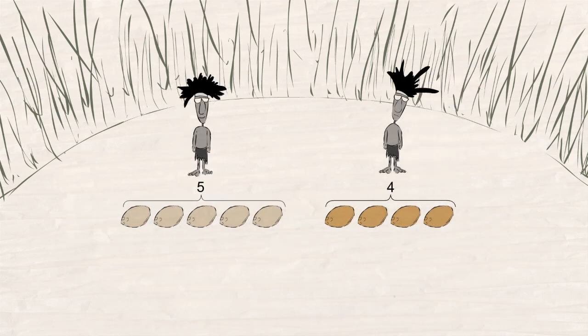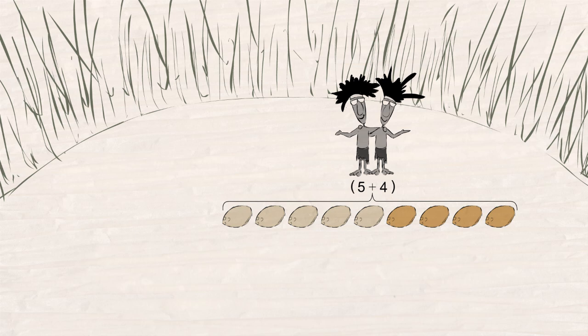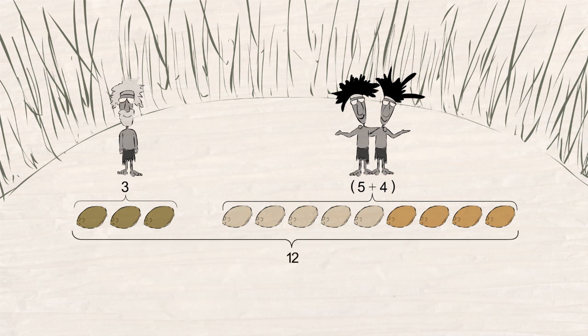On the other hand, let's say you started out by pooling your five coconuts with your neighbor on the right who had four coconuts. So you start out with a group of nine coconuts. Then your neighbor on the left gives you his three, so you end up with three plus your group of nine or a total of twelve coconuts. You still end up with the same number of coconuts.